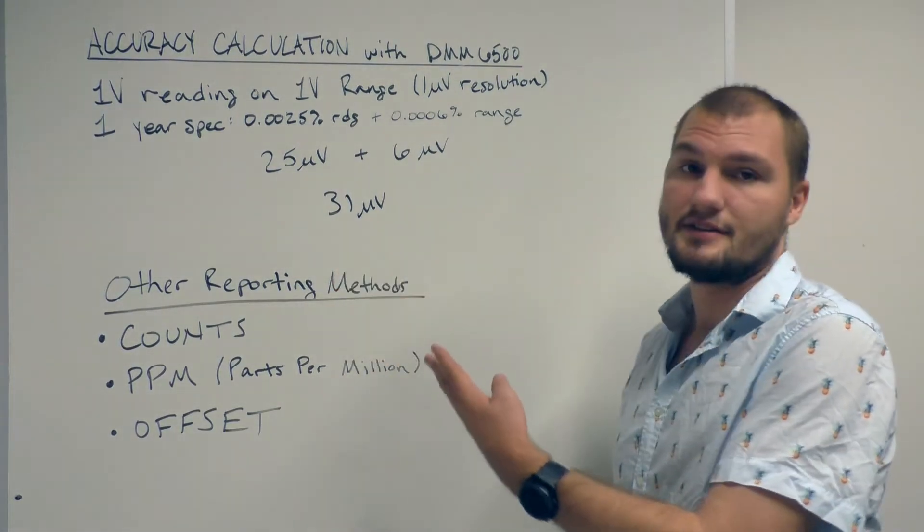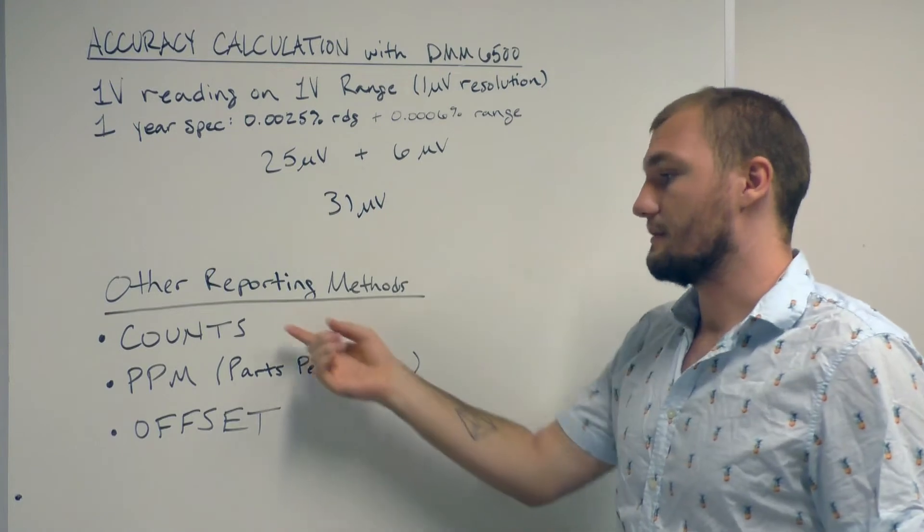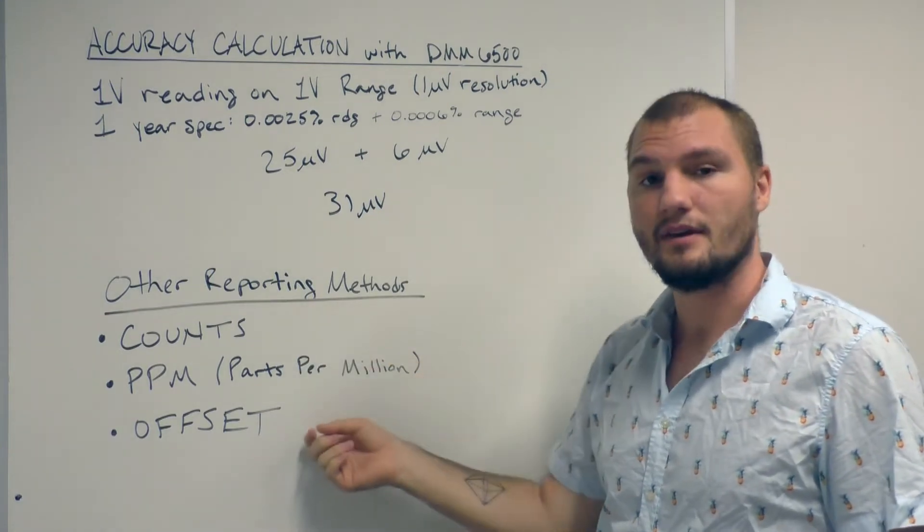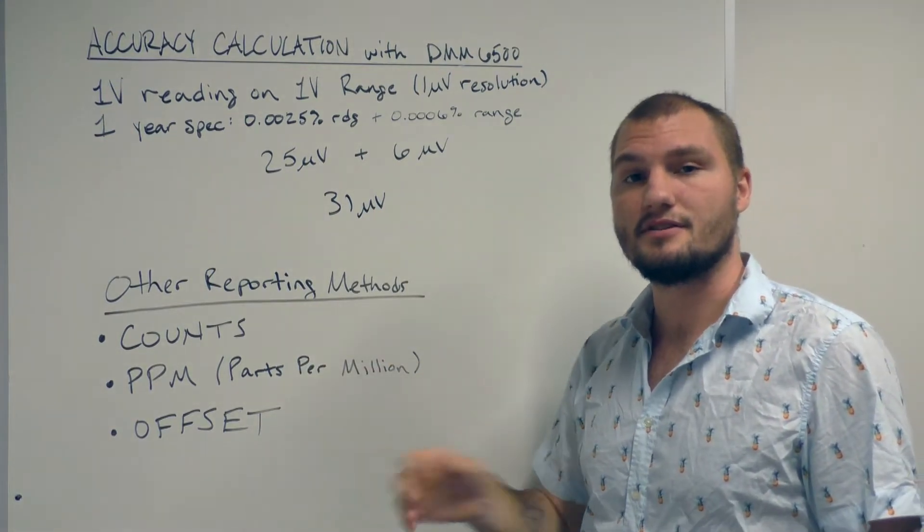Now this is just one way to calculate accuracy, there are a few others. For example, there's counts, ppm, and offset. We're going to get into those in just a second here.